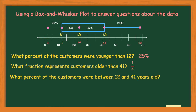Another question might be: what percent of customers were between 12 and 41 years old? On the box and whisker plot, 12 is quartile one and 41 is quartile three — that's the entire box. The box represents 50 percent of the data because 25 plus 25 equals 50. This tells the ice cream shop owner that 50 percent of customers were between 12 and 41, suggesting families with adults and kids, so they'd want ice cream flavors that appeal to both.